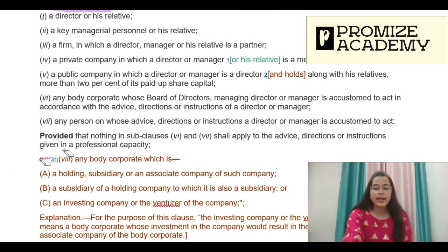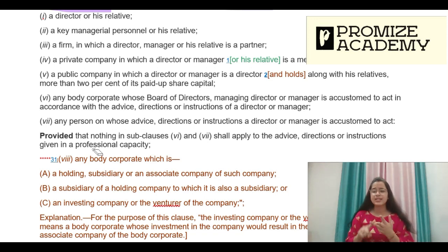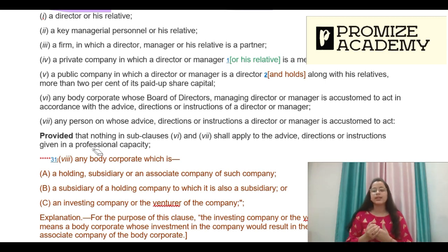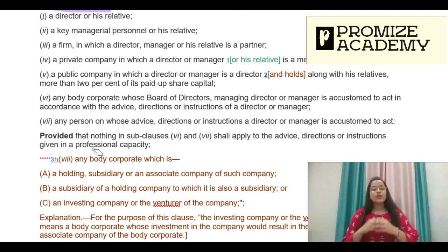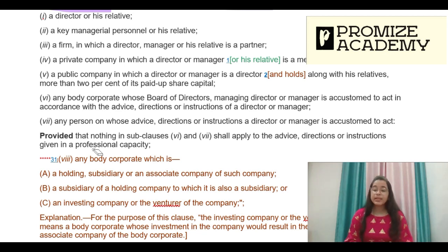Provided that — there is a proviso: if professionals such as CAs, CMAs, or advocates are acting in their professional capacity, they are excluded from the definition of related party. If they were included, they would be related to every company they work for. That is why professionals doing their own professional work for the company are excluded.